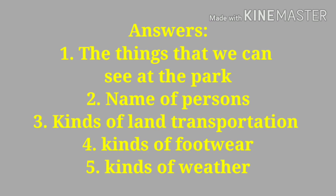Number three: A. Tricycle, B. Gypsy, C. Buses. What is the appropriate heading? 'Kinds of land transportation.' Number four: A. Sacks, B. Sleepers, C. Shoes. What is the appropriate heading? 'Kinds of footwear' or 'footwear.' Number five: A. Sunny Day, B. Windy Day, C. Rainy Day. What is the appropriate heading? 'Kinds of weather' or 'different kinds of weather.' How many of you got 5?